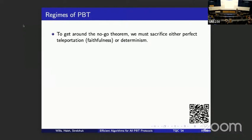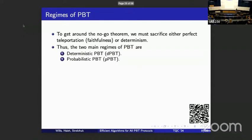We want to do this with a finite number of ports, so we have to give something up. This is the power and the problem with PBT. We're either going to give up faithfulness or determinism — either the ability to teleport the qubit perfectly, or the ability to teleport it every time. This defines our two main regimes. In deterministic PBT (DPBT), teleportation is deemed to have succeeded every time but the qubit is teleported imperfectly, so fidelity is slightly less than one.